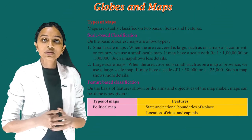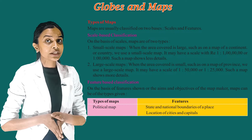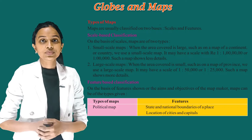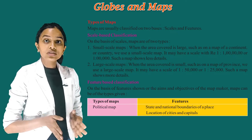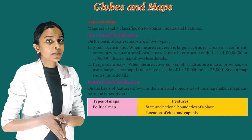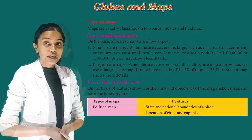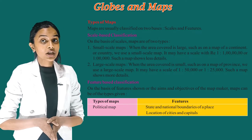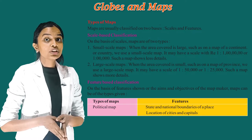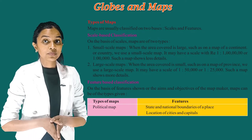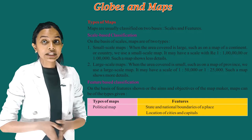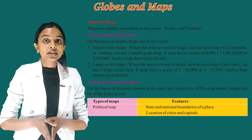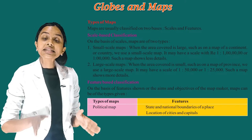Now see the types of maps. Maps are usually classified on two bases: scales and features. Scale-based classification: on the basis of scales, maps are of two types. Small-scale maps: when the area covered is large, such as on a map of a continent or country, we use a small-scale map. It may have a scale with RF 1:10,00,000 or 1:1,00,000. Such a map shows less detail.